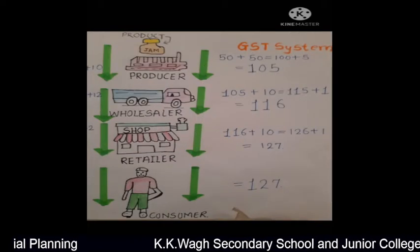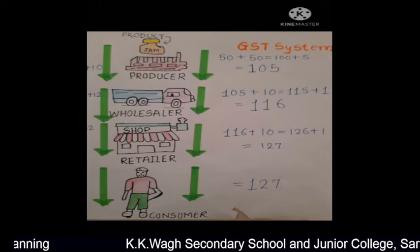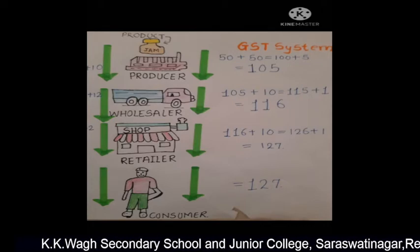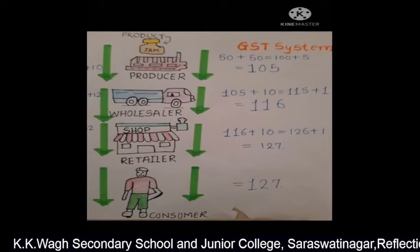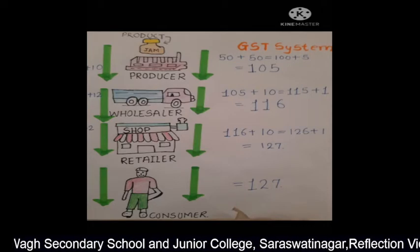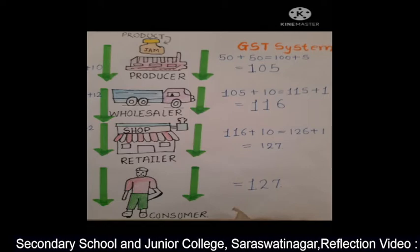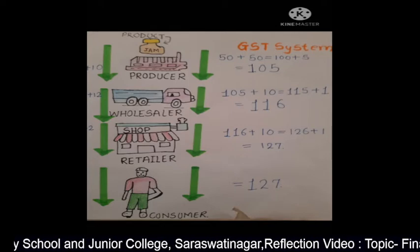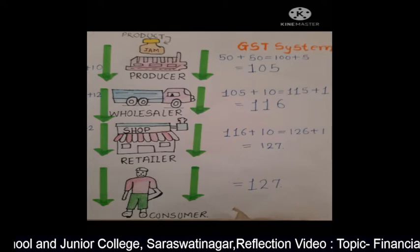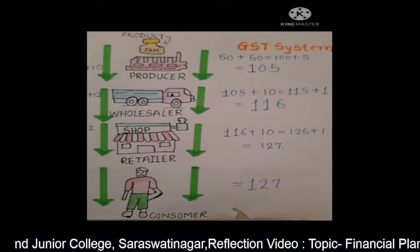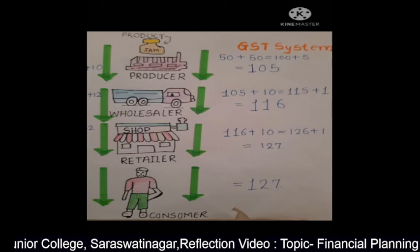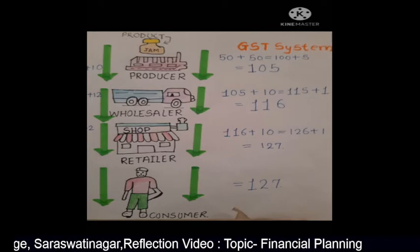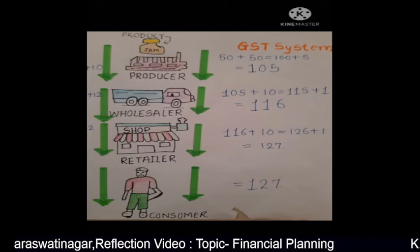Now, I would like to explain how GST is different from other taxes. For example, after making a product, the product has to cross many levels, such as producer, wholesaler, retailer, and then consumer.